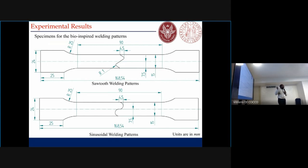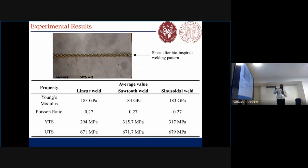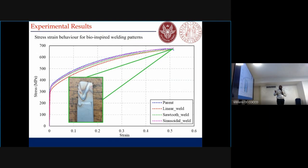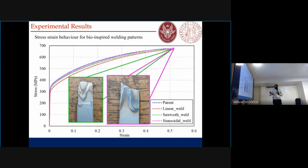Using the similar approach used to produce the linear weld, we produced these specimens. These are the specific shapes after the welding. When we performed the experiments, we found that the yield strength is improved in both cases — around 50 percent closer to the parent material. We can see the fractured specimens, and the specimen is not breaking from the weld, which was the case for the linear weld. So this approach is better than the linear weld to improve the strength of the joint.